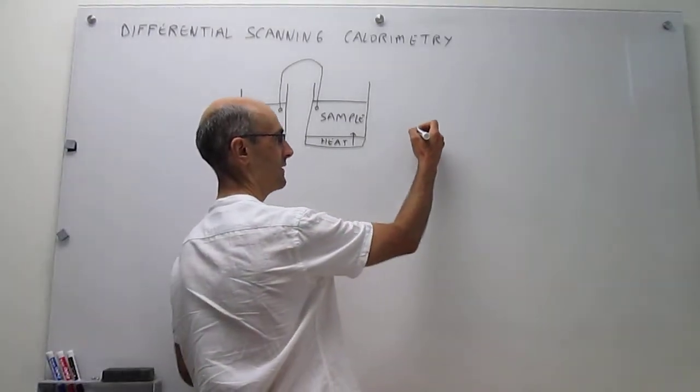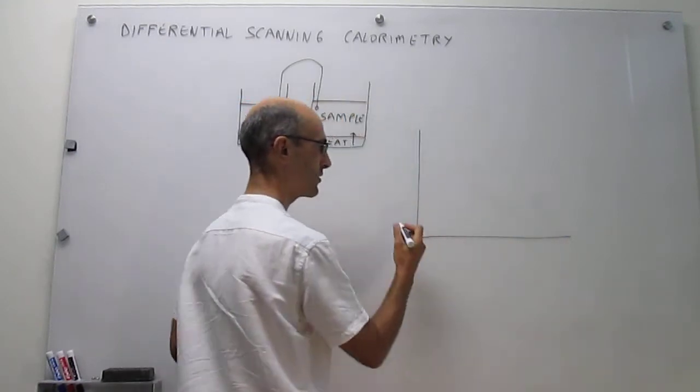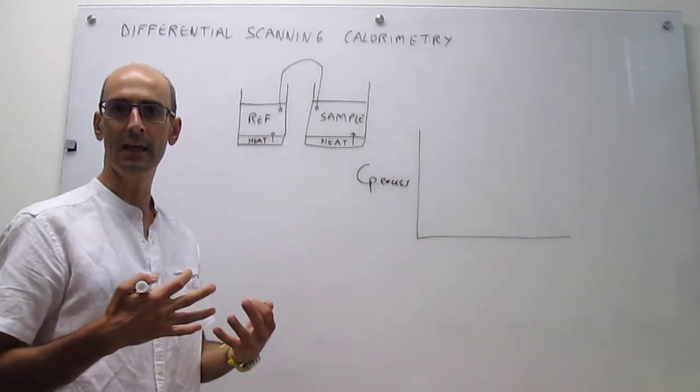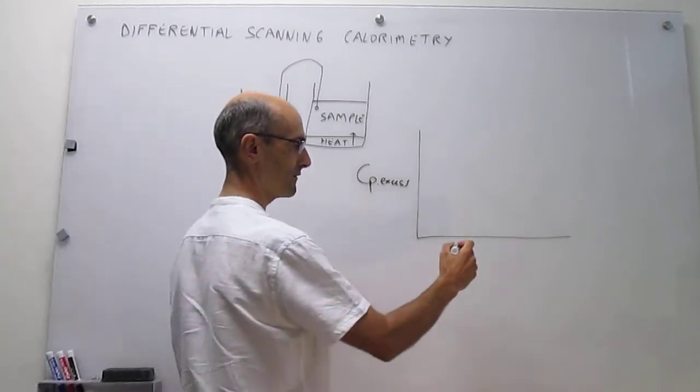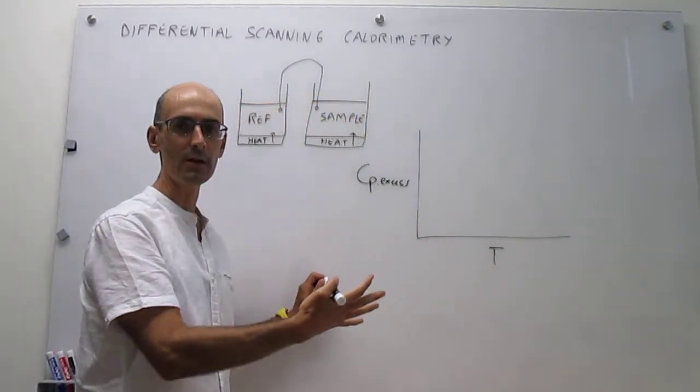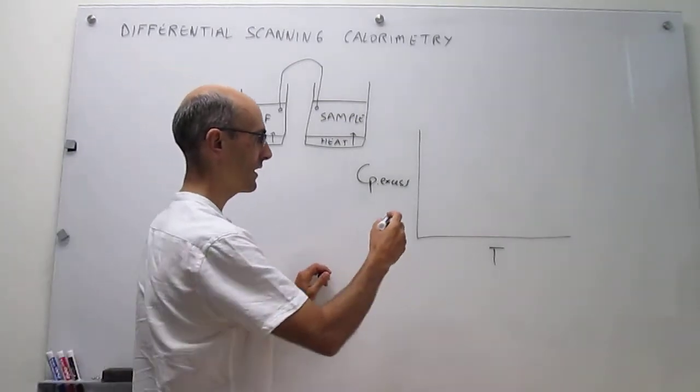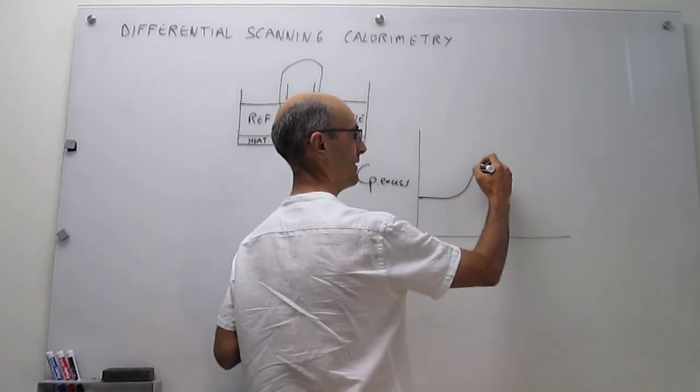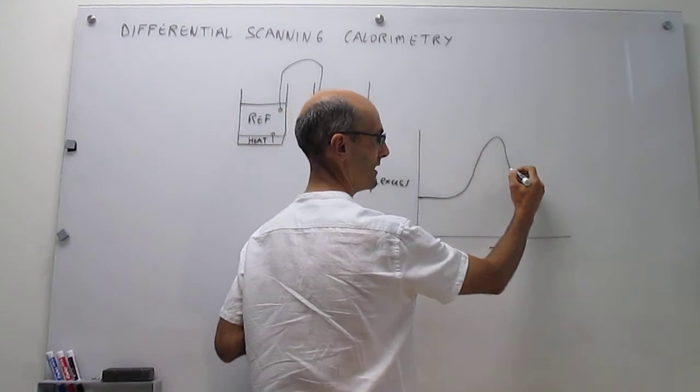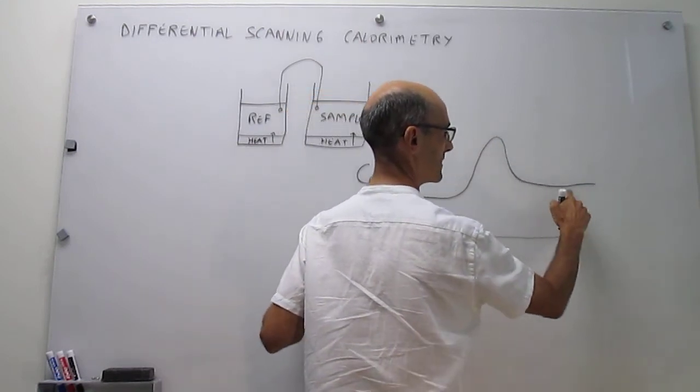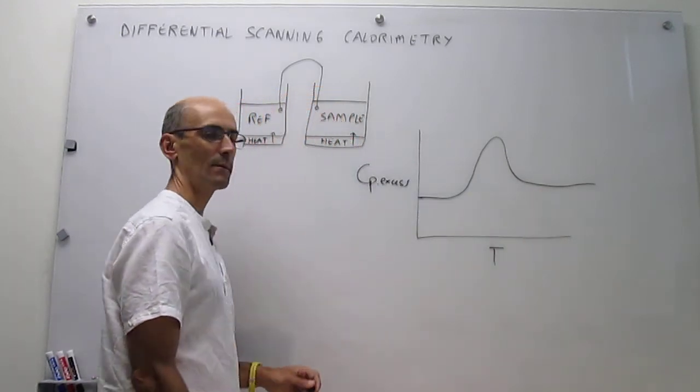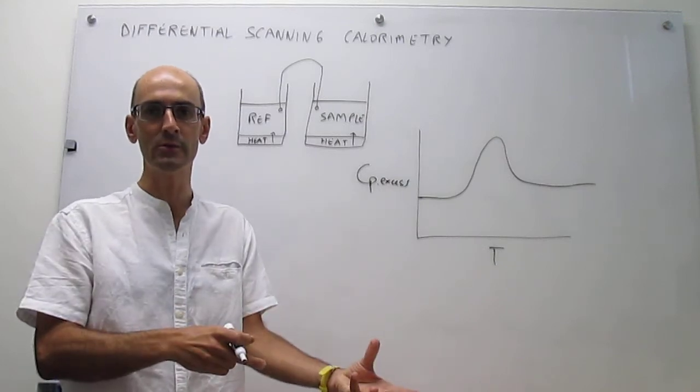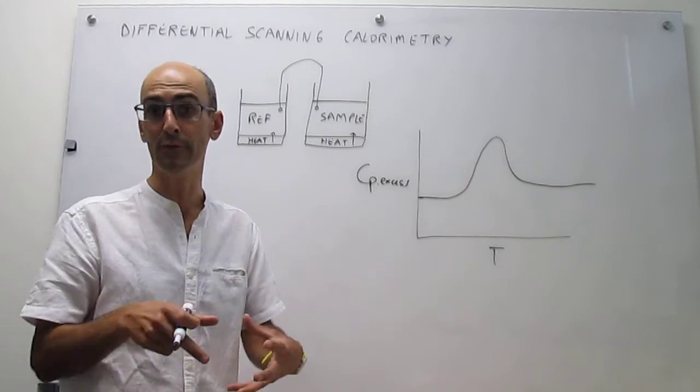So in the end, what the end of the experiment looks like is like this. You're actually going to plot that excess heat capacity that is intricately connected to this phase transition as a function of temperature. And the way that these graphs look like is what we call a thermogram. So before the denaturation, there's no excess heat capacity, but then as the phase transition denaturation is taking place, you get a peak and eventually you get to a different value of the heat capacity that has to do with the fact that the final heat capacity of the unraveled or denatured protein is different from the heat capacity of the folded protein.